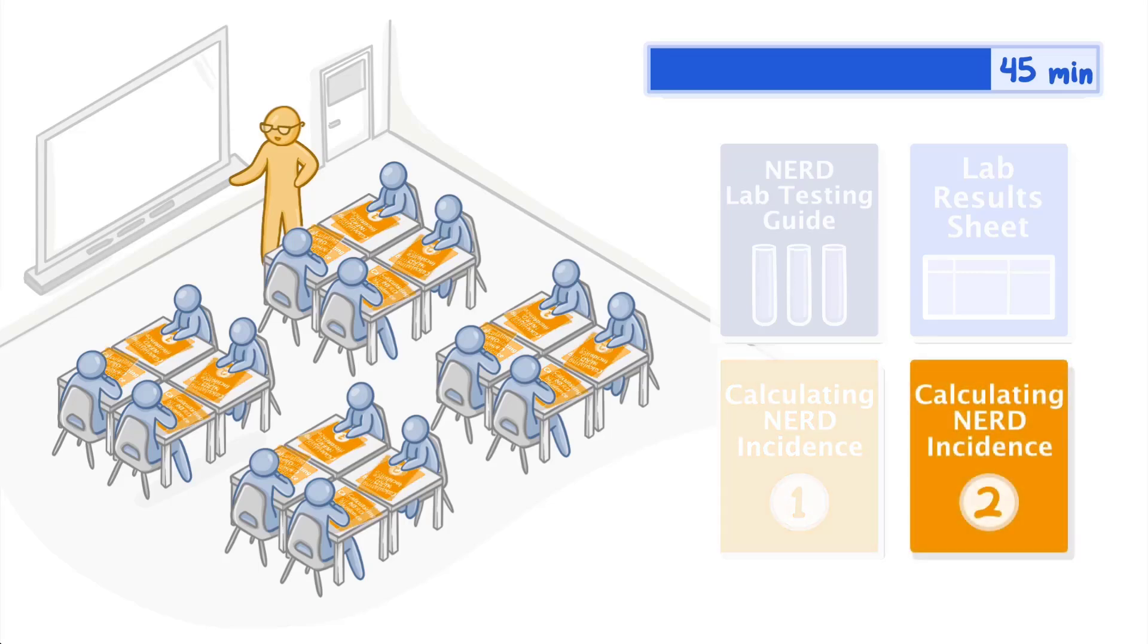Next, hand out a Calculating NERD Incidents Part 2 sheet to each student. Together, review the completed table and answer questions about how the university might use this information to make decisions about reopening.